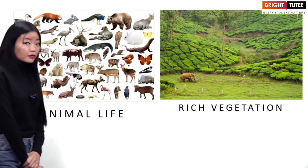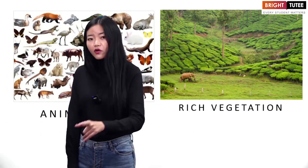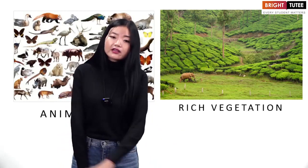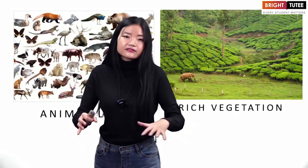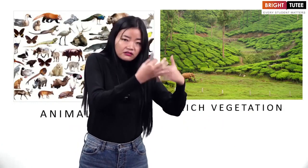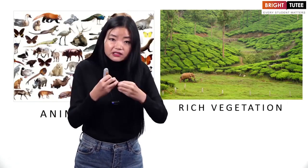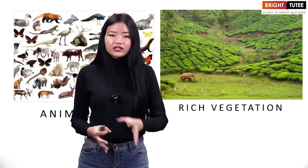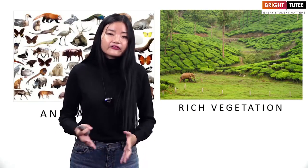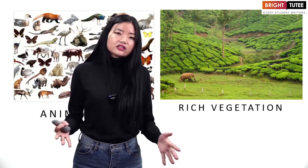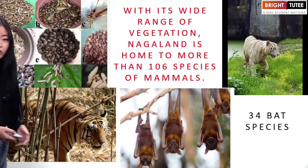Animal life is purely dependent on natural vegetation. Both herbivores — animals that eat plants — and carnivores — animals that eat meat — depend on natural vegetation, forming a cycle. Therefore, Nagaland, with its rich vegetation, is also rich in wildlife.